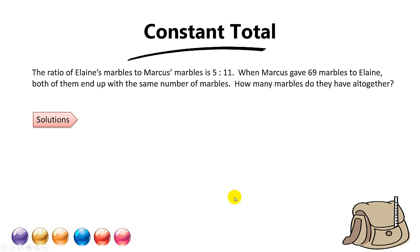Welcome back. The next question we are going to revise falls under 'Constant Total,' which means the total remains the same. In this question, the ratio of Elaine's marbles to Marcus's marbles is 5 to 11. When Marcus gave 69 marbles to Elaine, both of them ended up with the same number of marbles. How many marbles do they have altogether? We know this question falls under Constant Total because of this keyword here — when Marcus gives the marbles to Elaine, the total remains unchanged.